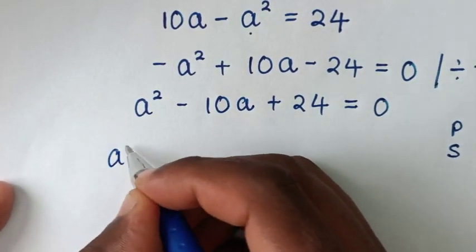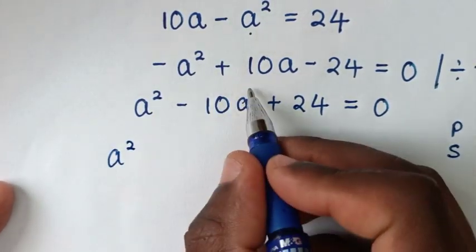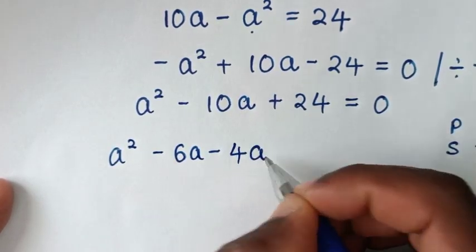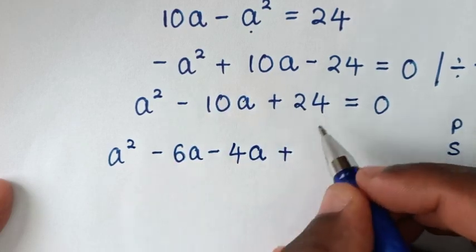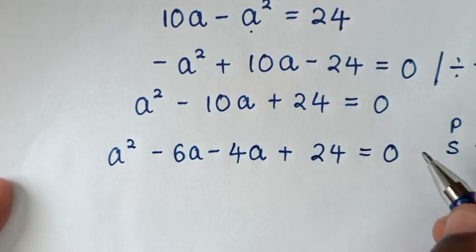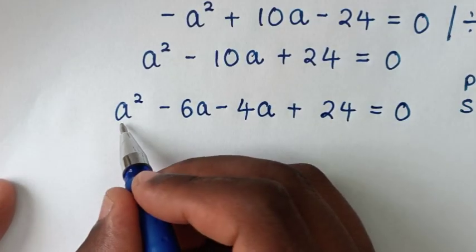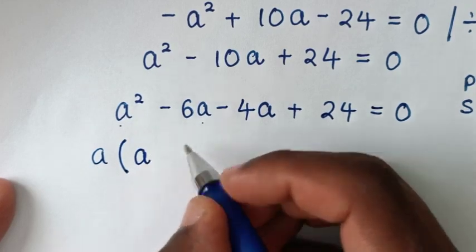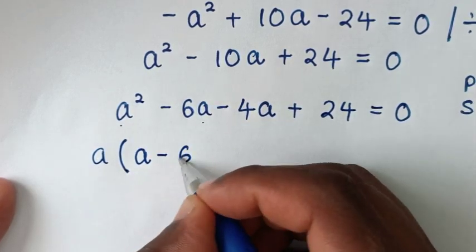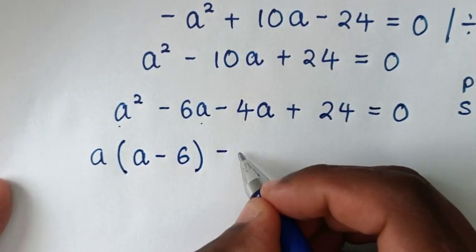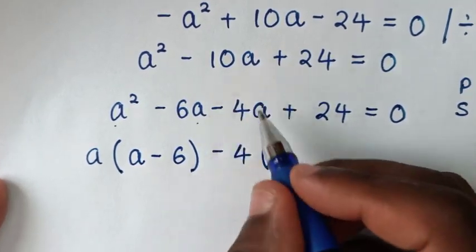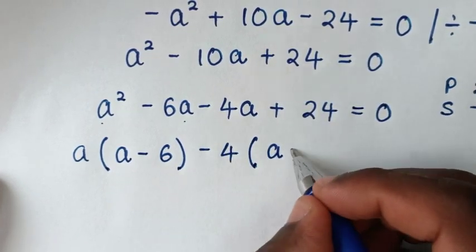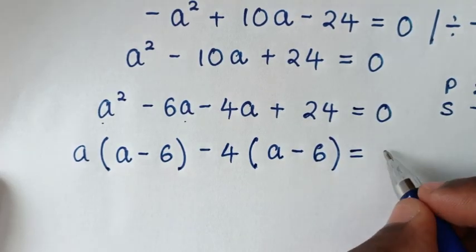From here, we split negative 10a into negative 6a and negative 4a, giving us a squared minus 6a minus 4a plus 24 equals 0. Then we take a out of the first group: a(a minus 6), and negative 4 out of the second group: negative 4(a minus 6), which equals 0.